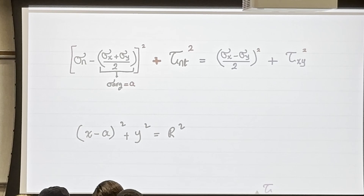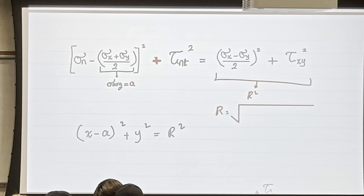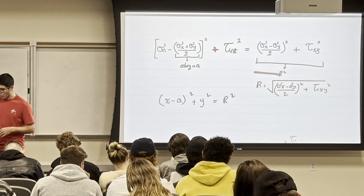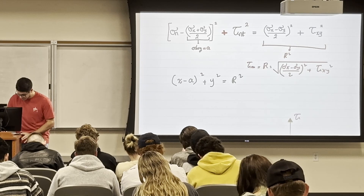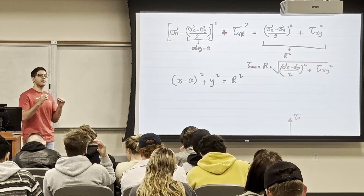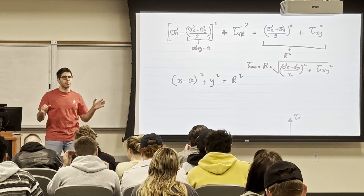What does that radius equation remind you of? That's τ_max — the in-plane maximum shear stress. So I'll call this the τ_max equation. What we are doing now is just plane stresses — I haven't introduced out-of-plane considerations yet. So the horizontal axis is now σ, and the vertical axis is τ.